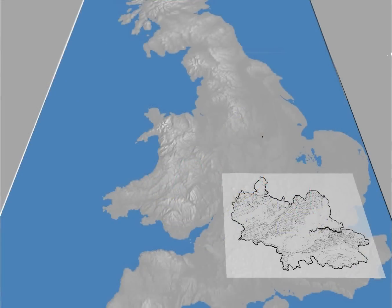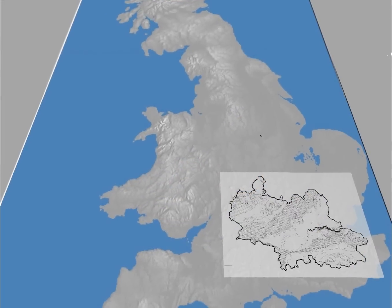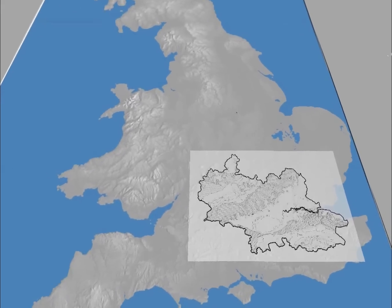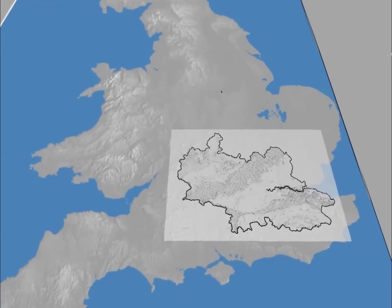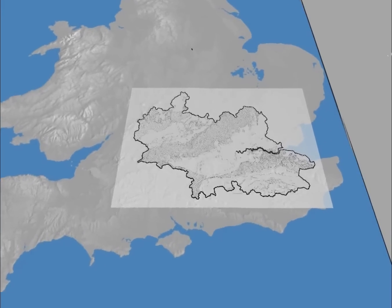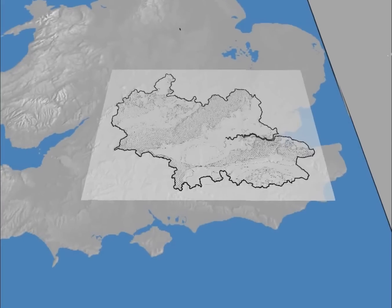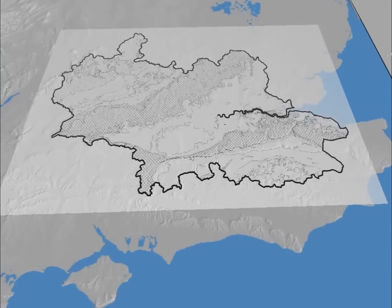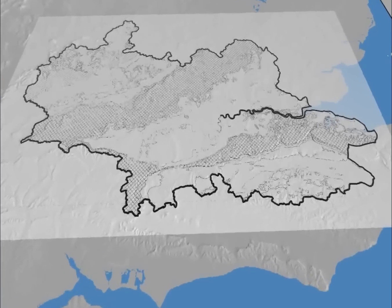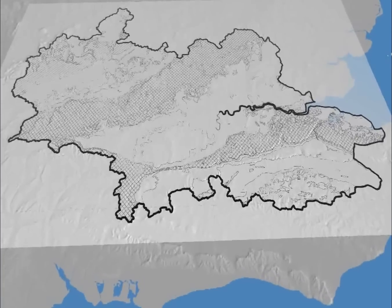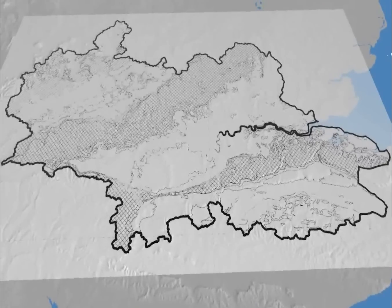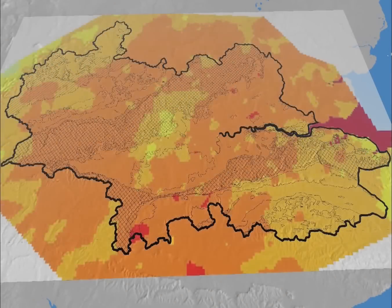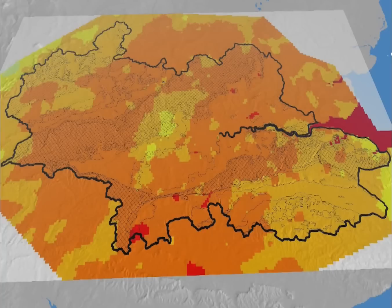So why do we need to consider groundwater systems in the Thames Basin? To answer that, here is a simplified geology of the Thames Basin. At the top of the screen you can see the Cotswolds oolitic limestone in the single hatching, and in the centre and bottom right the outcrop of the Chalk in the cross-hatched areas.